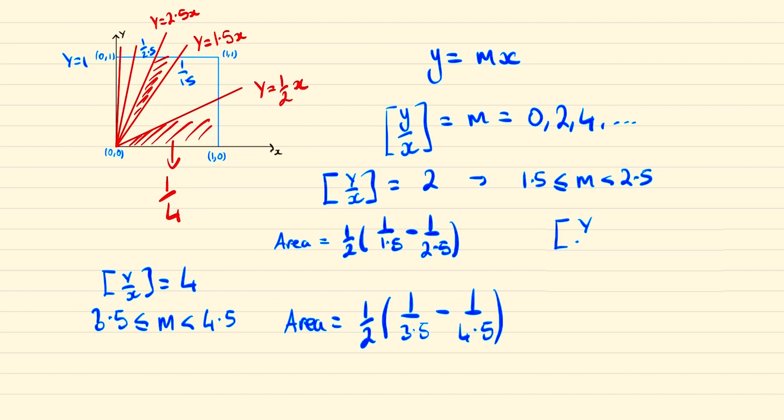Now hopefully you can start to see the pattern. So considering when does y/x round to 6, this will occur when the area of our triangle is (1/2) × (1/5.5 - 1/6.5).